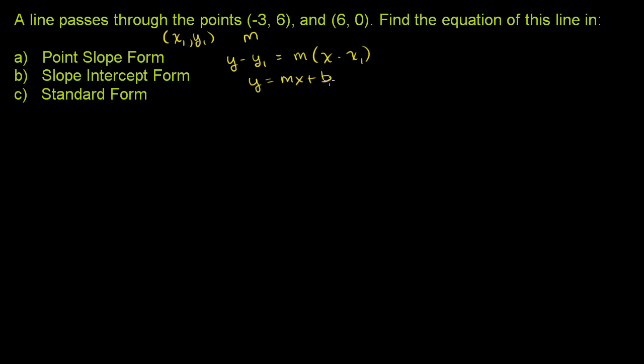Standard form is ax + by = c, where these are just two numbers, essentially. They really don't have any interpretation directly on the graph. So let's do this. Let's figure out all of these forms. First we want to figure out the slope. Once we figure out the slope, then point-slope form is very straightforward to calculate.